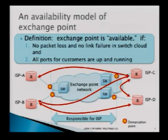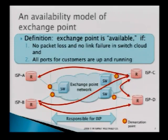There is a demarcation point between the exchange point switch network and the ISP routers, and our exchange point is responsible for this side. So the definition is: the exchange point is available if there is no packet loss and no link failure in the switching cloud, and all ports for the customers are up and running. This is defined as the normal available case.